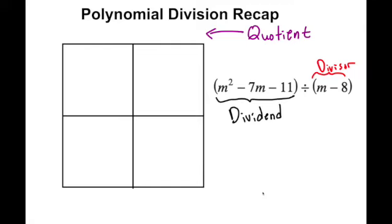In class, we learned how to use the area method or the box method to kind of reverse multiplication and turn it into division. Because we talked about how if we know the product that we get from the box and we know one of the numbers we multiplied, finding the other number that we multiplied is the same thing as doing division.